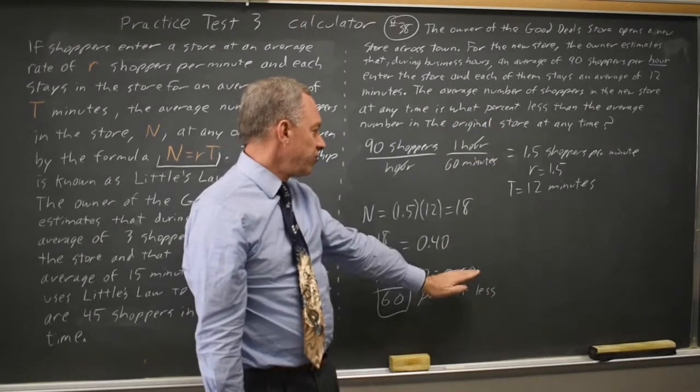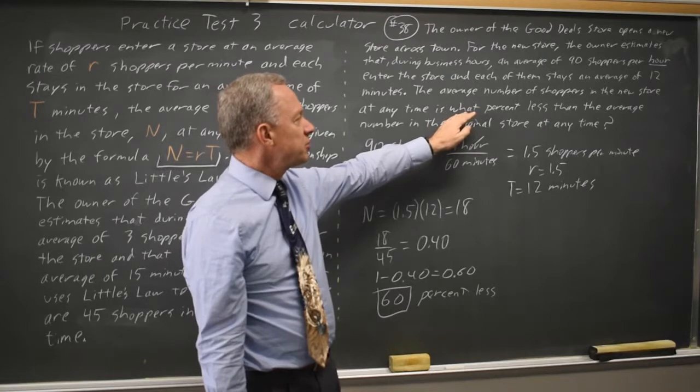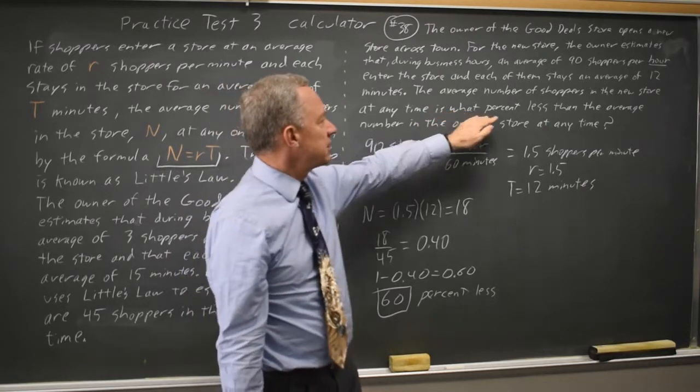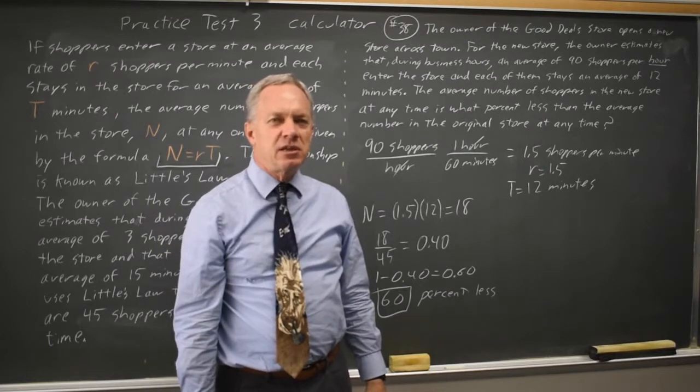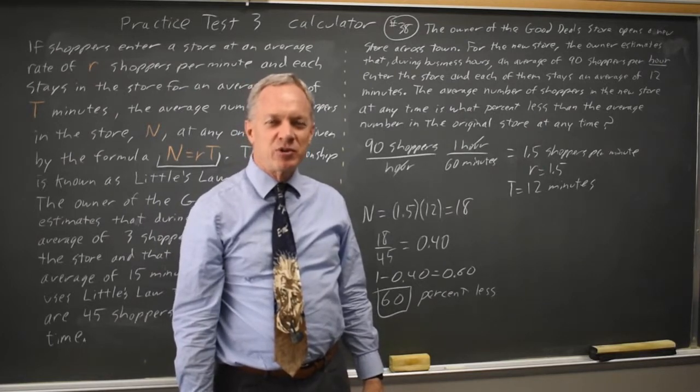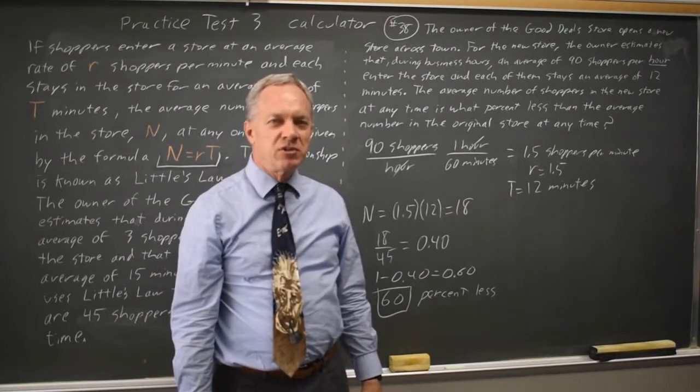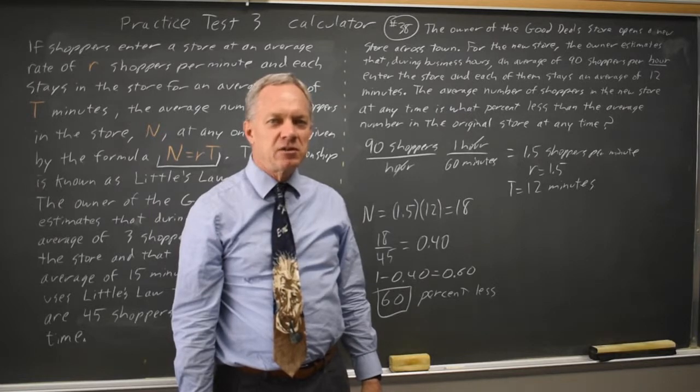So if you found 40% and you come back and say, we're 40% of, and then you say, wait a minute, they're asking for what percent less? At that point, you should say, oh, I see what they're going for, and 40% of the original is 60% less than the original.